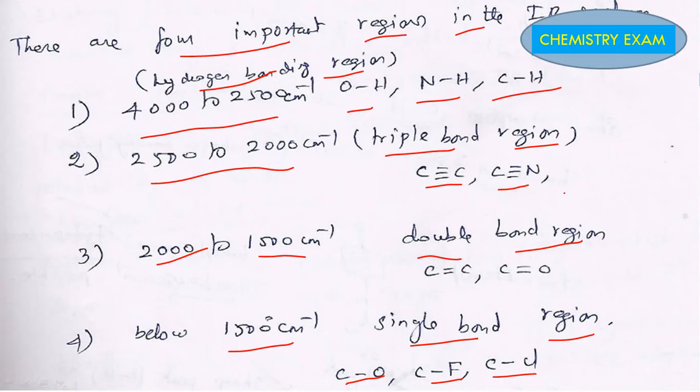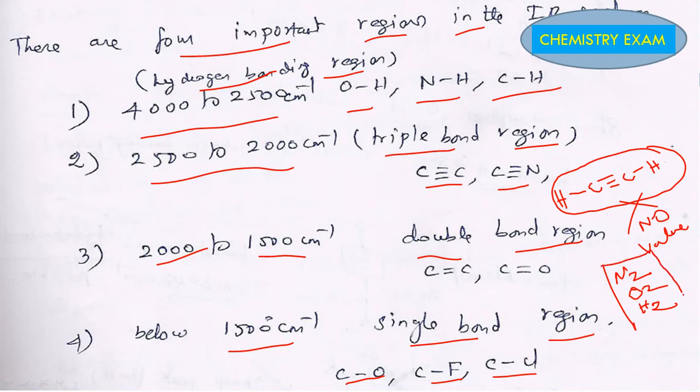N2, O2, H2—these all are no IR spectroscopic, no spectrum you will get, because there is a symmetry molecule.